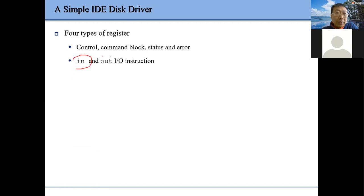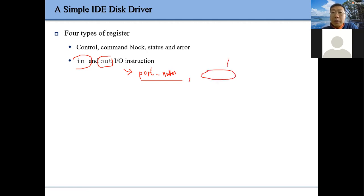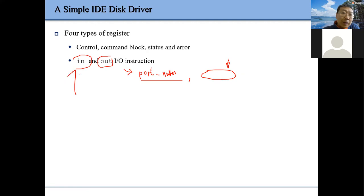IN and OUT IO instructions use a port number — the port number is basically our address for different devices. Using this port number with different values, we can either transfer our data or set up our buffer, and all different kinds of commands and statuses can be implemented through IN and OUT. IN basically means read from the device; OUT means write to the device.